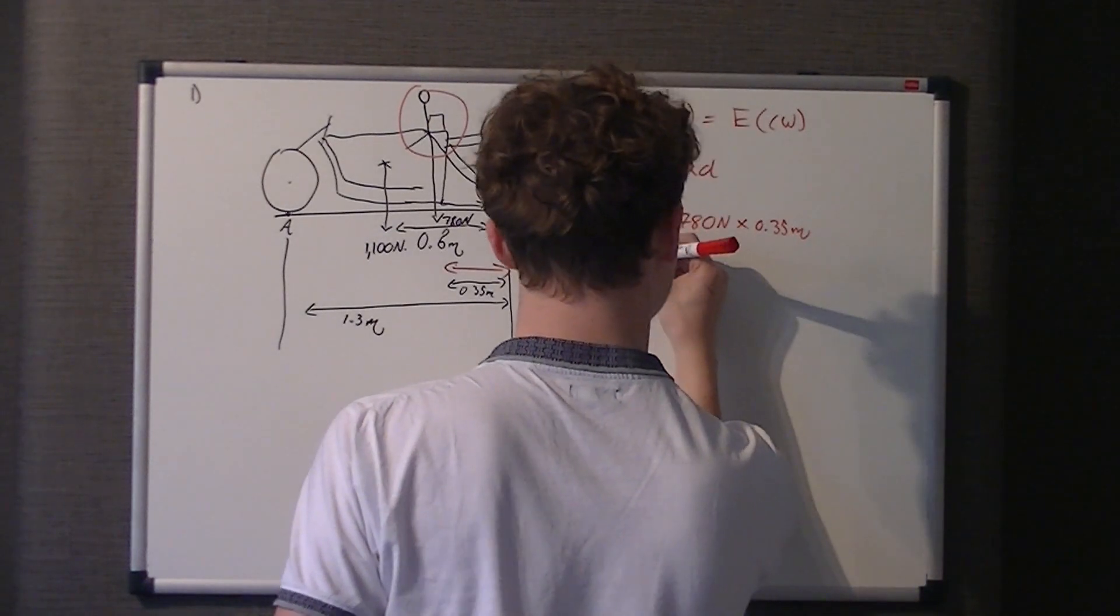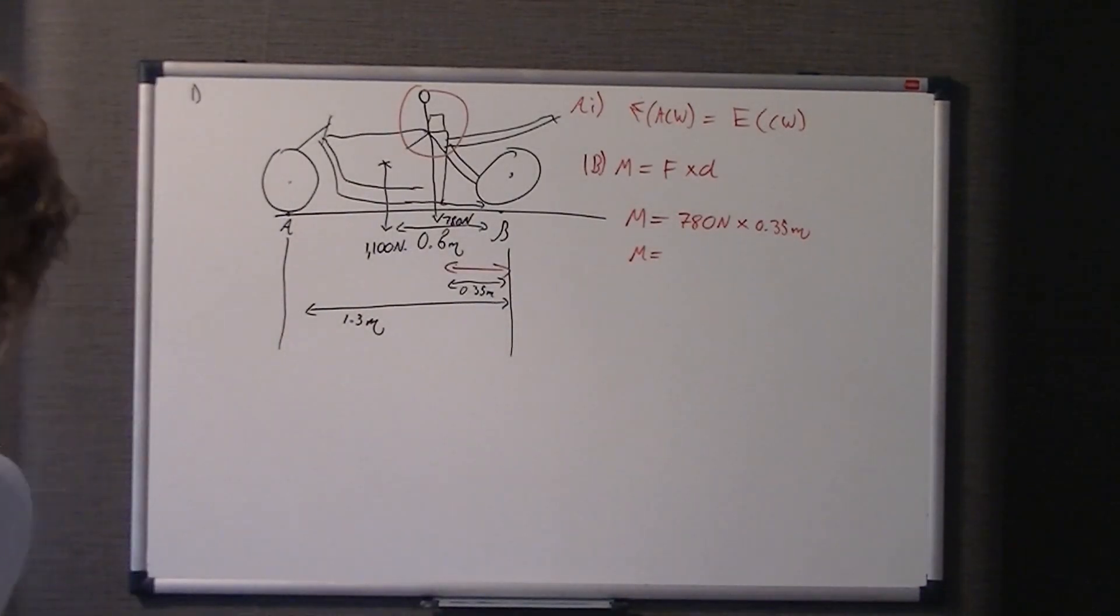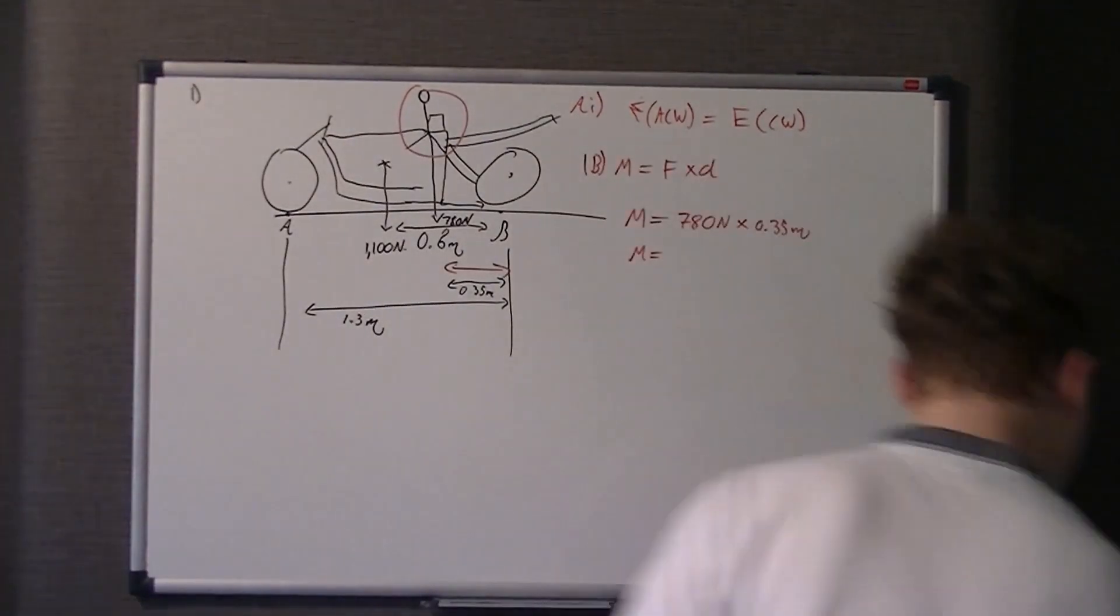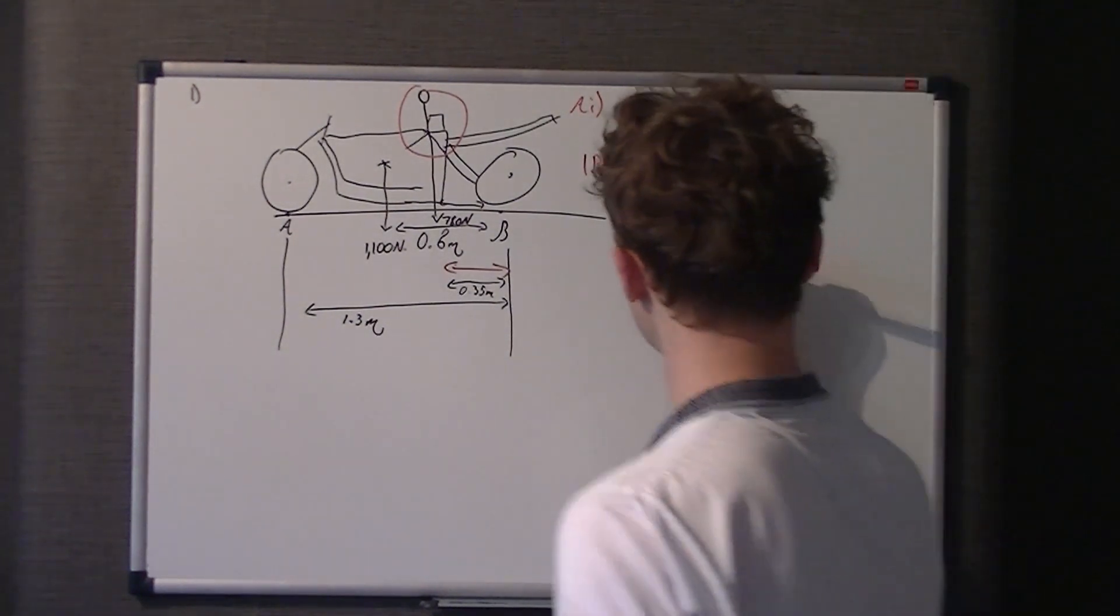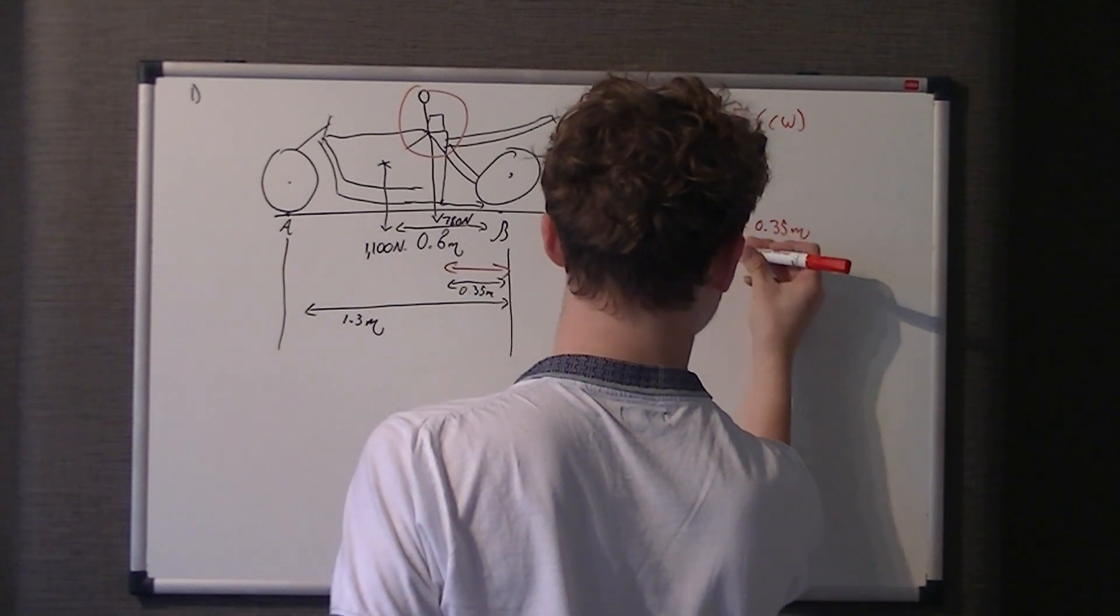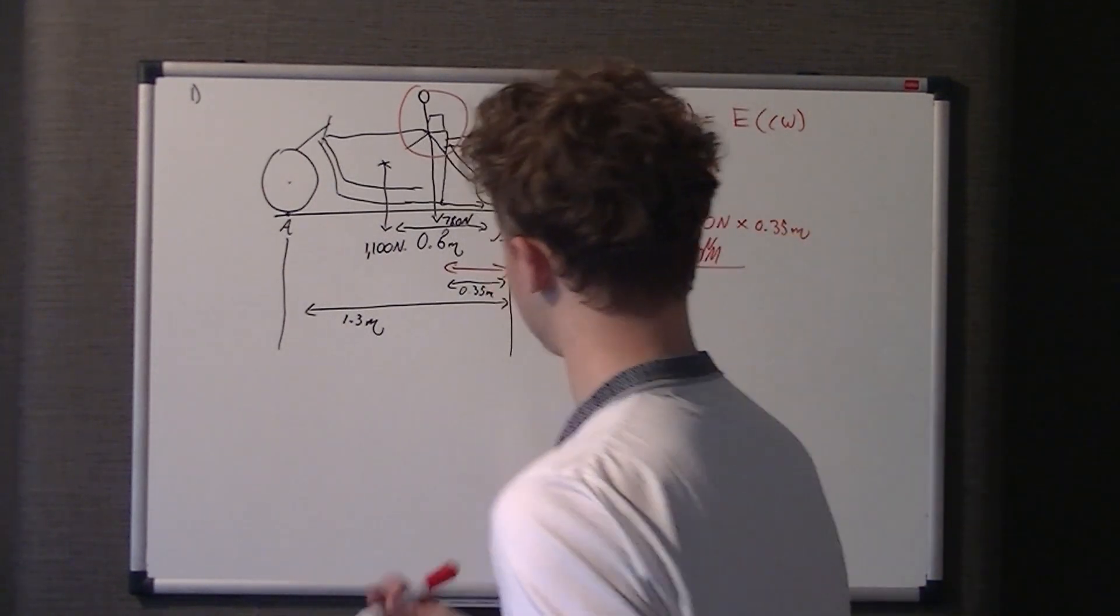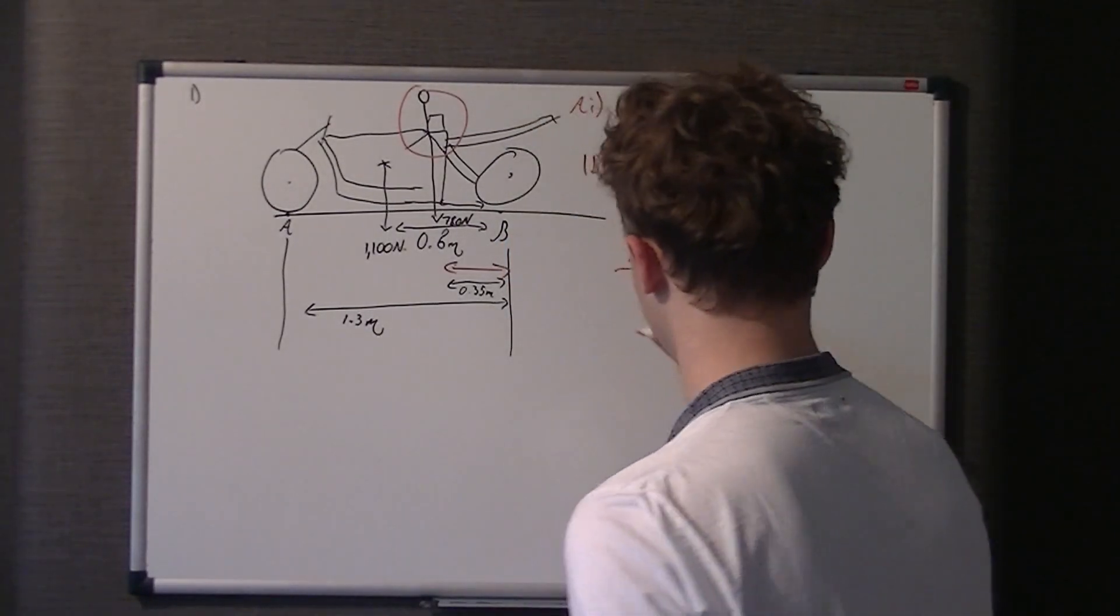So, 780 newtons times 0.35 metres. And, so, that gives you a moment of... Just give me a second. So, I'll probably show you the calculation in my head first. 270 newton metres. No, it's not newtons per metre. It's simply newton metres. So, that's the first bit done.